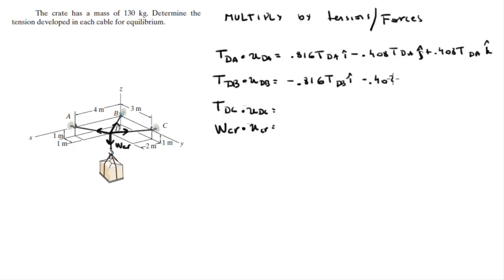The next ones: minus 0.816 TDB in the i minus 0.408 TDB in the j plus 0.408 TDB in the k, and minus 0.667 TDC in the i plus 0.667 TDC in the j plus 0.333 TDC in the k.